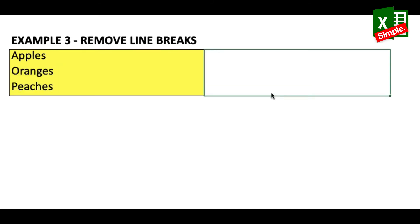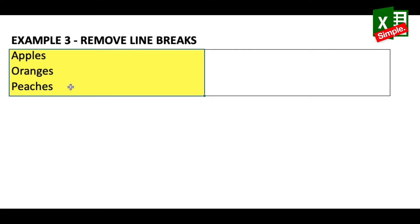A very good use of the SUBSTITUTE function is to remove line breaks within a cell. In this example we have line breaks with three different words in one cell — Apples, Oranges, and Peaches. What we want to do is remove the line breaks and instead put a comma between these three words.